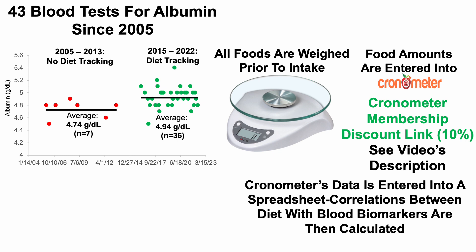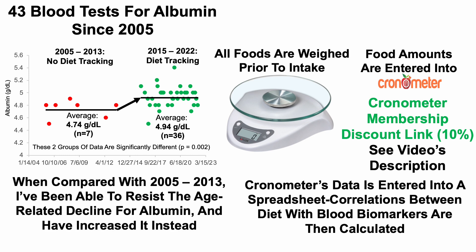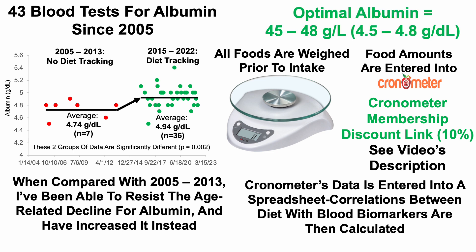Using a two-sample t-test, these two groups of data are significantly different. When compared with 2005 to 2013, I've been able to resist the age-related decline for albumin and have significantly increased it instead. If you remember, optimal albumin is 45 to 48 grams per liter, or 4.5 to 4.8 grams per deciliter.